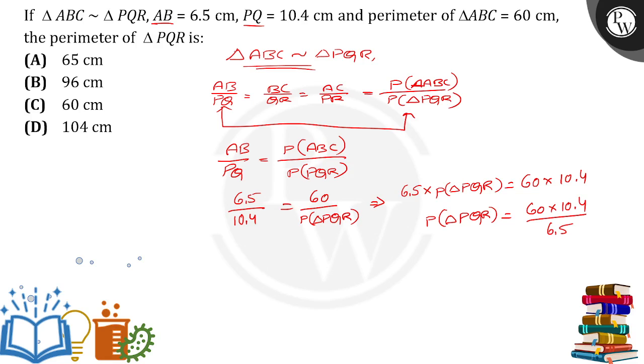Here 10.4 can be written as 104 by 10, 6.5 can be written as 65 by 10, so we can eliminate the decimal point. We will get 60 into 104 by 65.